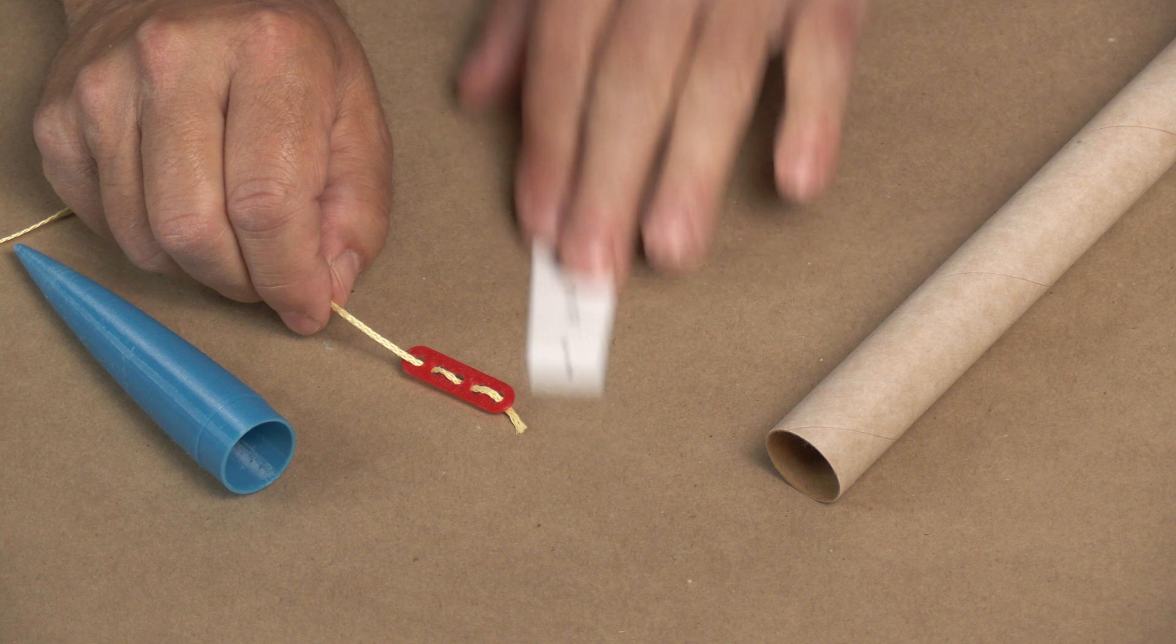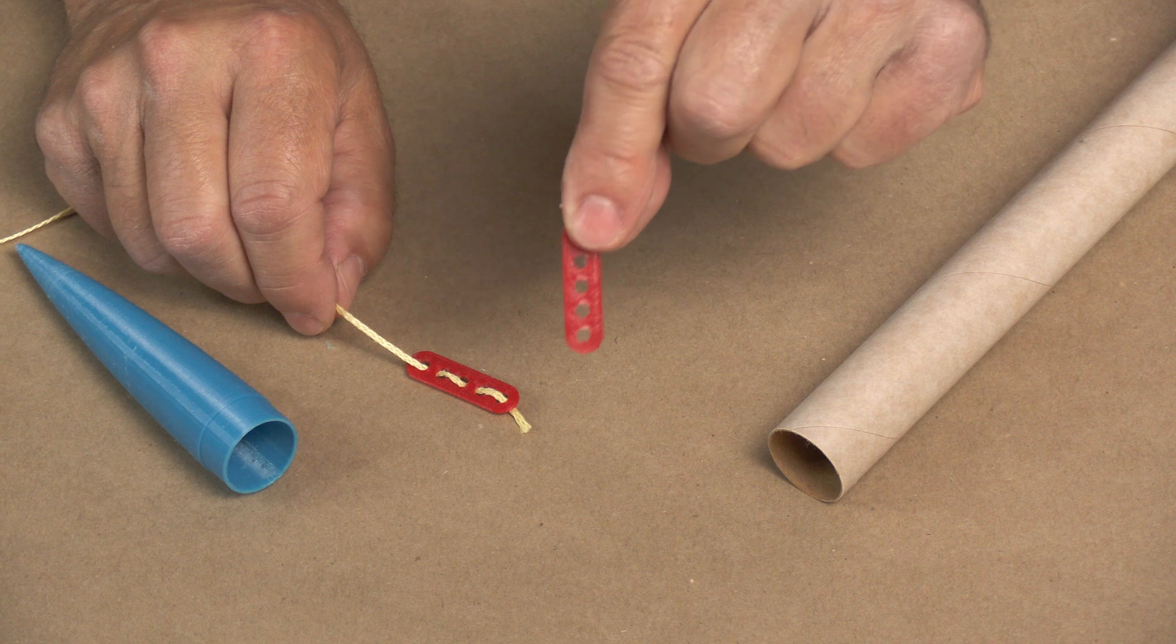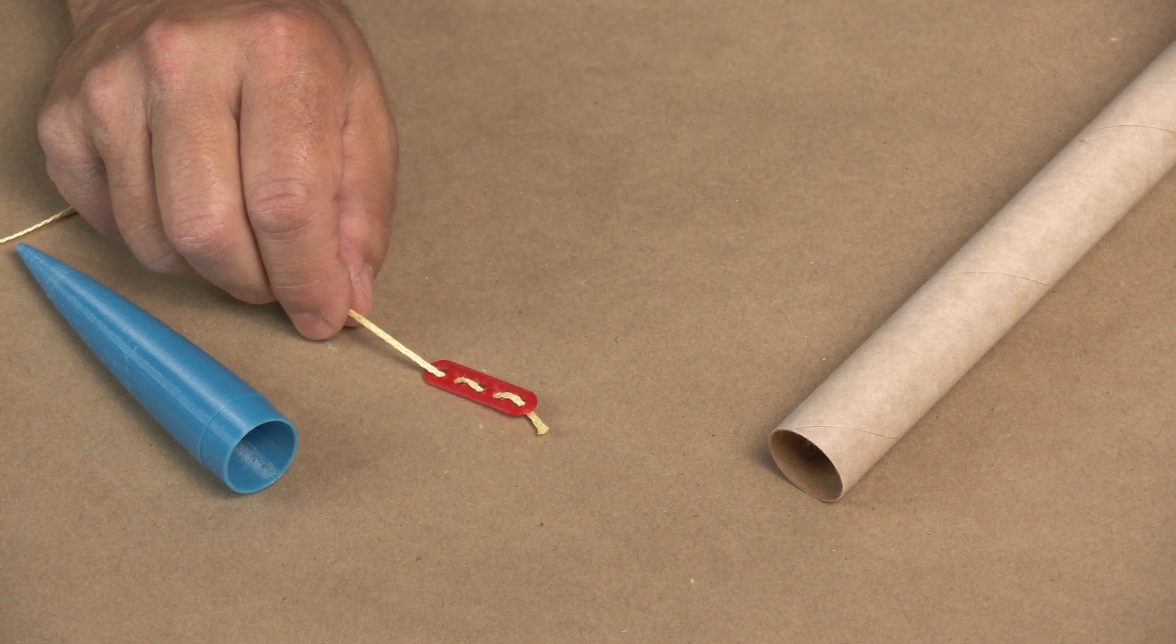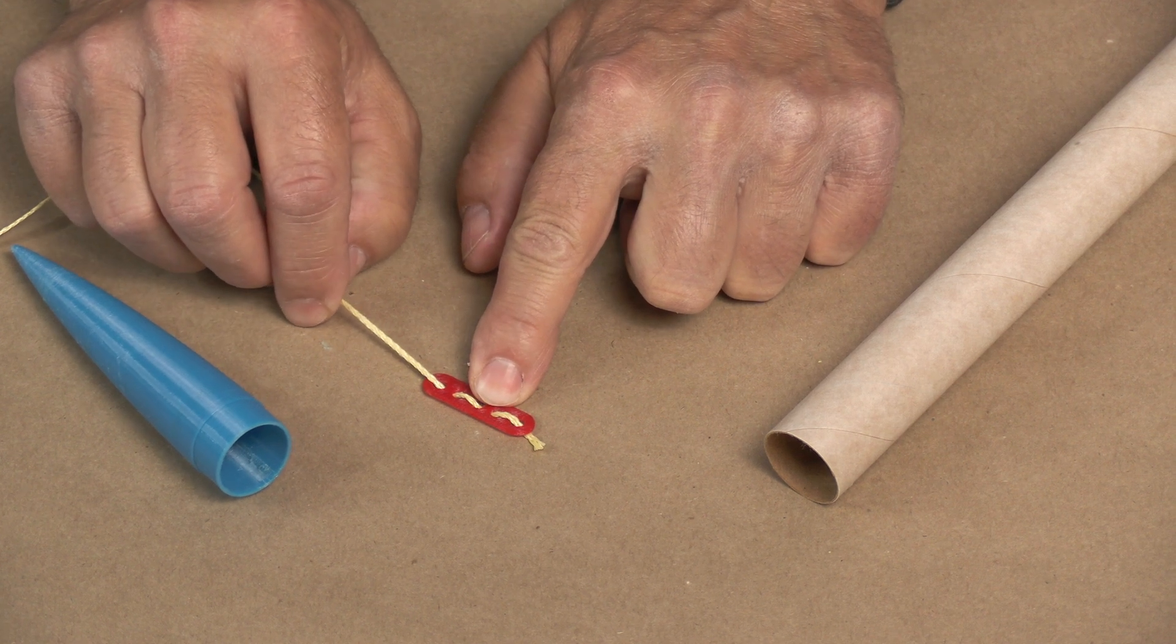Tea bags work pretty well. I've had a couple of them tear out. So I went to this 3D printed part. And it just has a number of holes in it. You can see before I loop the Kevlar through it. And that attaches inside the airframe and makes for a very sturdy mount.